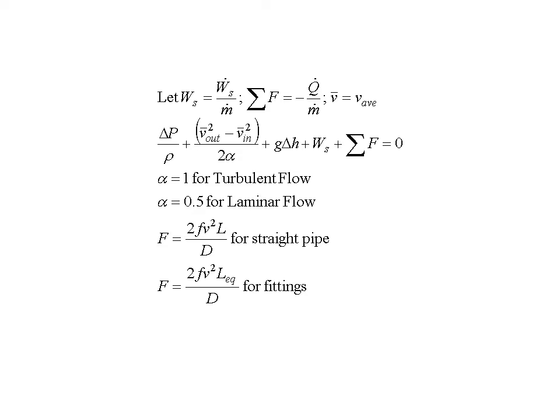Therefore, our pressure drop equation now reduces to delta P by rho, plus the square of the average velocity differences in and out divided by 2 times alpha, where alpha equals 1 for turbulent flow and alpha equals 0.5 for laminar flow, plus the potential energy change G delta H, plus W sub S, plus the sum of the frictional factors equals 0.